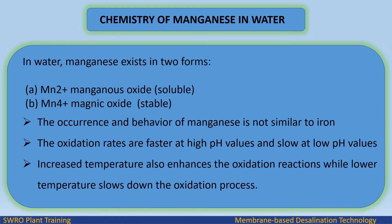In water, manganese exists in two forms: Mn2+ manganese oxide, which is soluble, and Mn4+ manganese dioxide, which is stable. The occurrence and behavior of manganese is not similar to iron. Oxidation rates are faster at high pH values and slow at low pH values. Increased temperature also enhances the oxidation reactions, while lower temperature slows down the oxidation process.